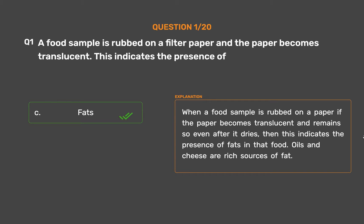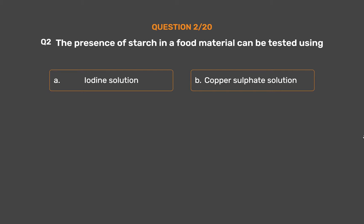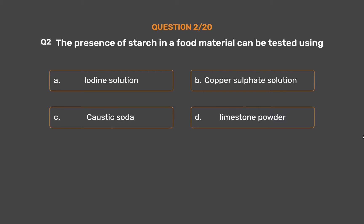Oils and cheese are rich sources of fat. Question number 2. The presence of starch in a food material can be tested using: Option A - Iodine solution, Option B - Copper sulfate solution, Option C - Caustic soda, Option D - Limestone powder.